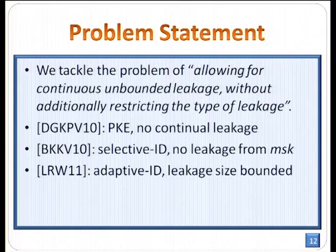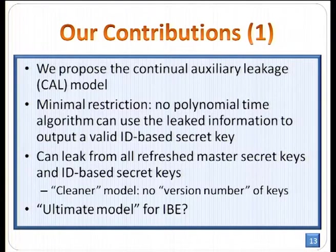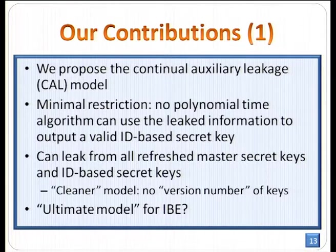Therefore, in this paper we tackle the problem of allowing for continuous unbounded leakage without additionally restricting the type of leakage. There are quite a few papers working on either PKE or IBE that cannot tackle this problem completely. Our contribution is first to propose a continual auxiliary leakage model. The minimal restriction we impose is that no polynomial-time algorithm can use the leaked information to output a valid ID-based secret key. In this model, the adversary can leak from all refreshed master secret keys as well as the ID-based secret keys. This is a clean security model because there are no version numbers for the secret key, and it may be the ultimate model for IBE.